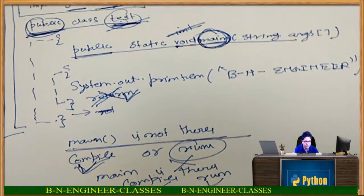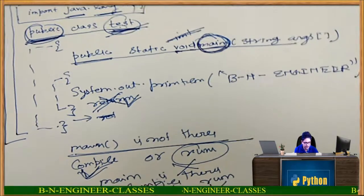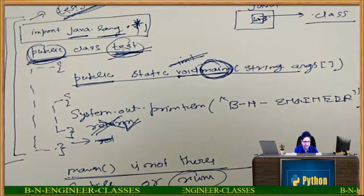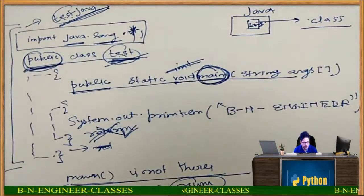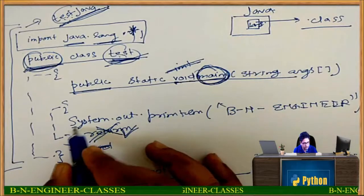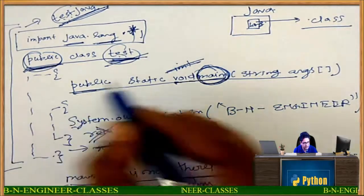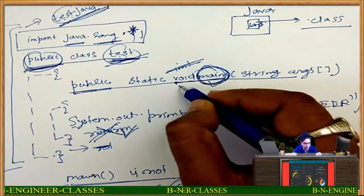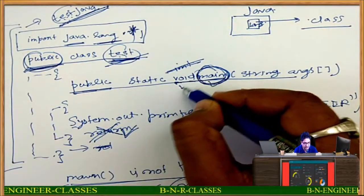So I think I told you so many things related to that. Now you can see here that public is clear, main is clear, void is clear.